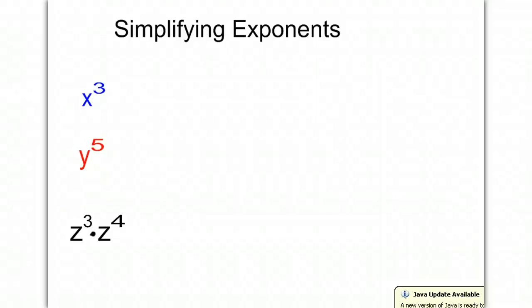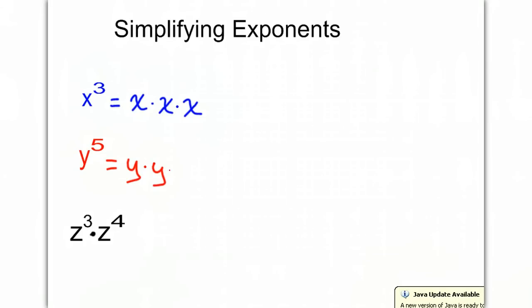Today we'll be simplifying exponents. If we look at the first expression, x cubed, we can rewrite that as x times x times x. If we look at the second expression, we can rewrite that as y times y times y times y times y. y to the power of 5 is not 5 times y — it is 5 y's multiplied together.